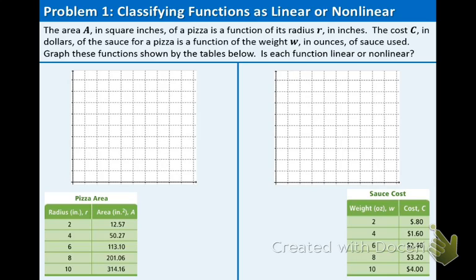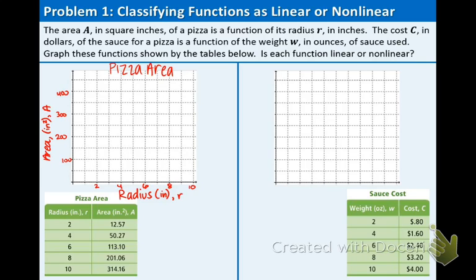We're going to be using graphs primarily in this example to figure out if they are linear or nonlinear. Let's work with the left side, the pizza area. Let's label the graph 'pizza area,' and our axes are going to be the labels from the table. Pause this and fill out the graph and you can follow along. Now that our points are plotted on the graph, does it look like a straight line? Actually, this graph is a curve, not a line, so the function is nonlinear.